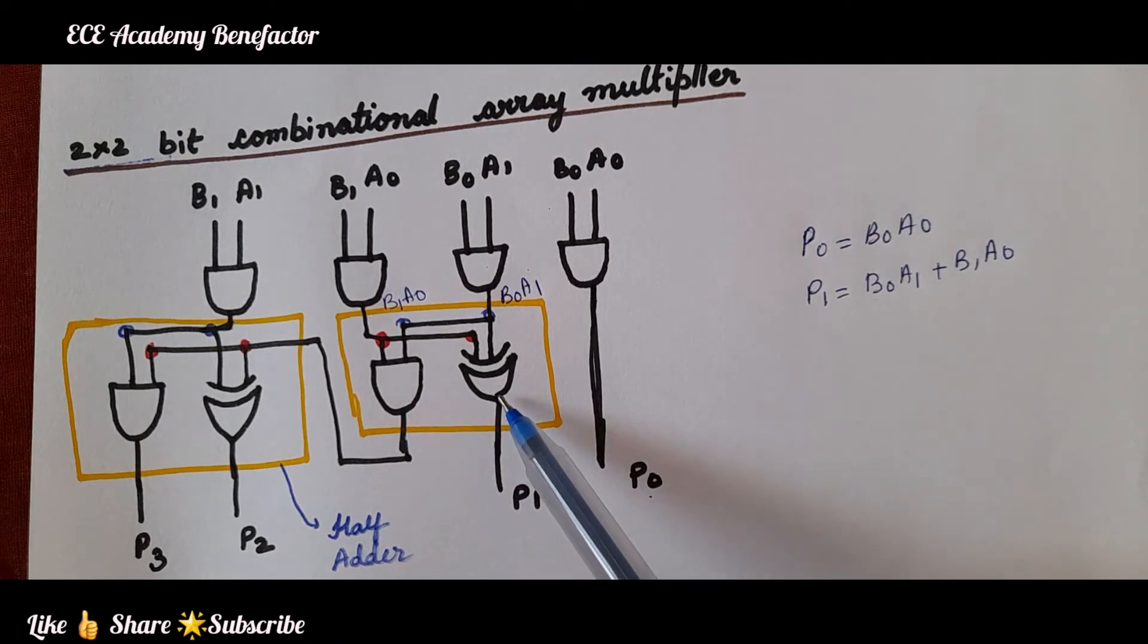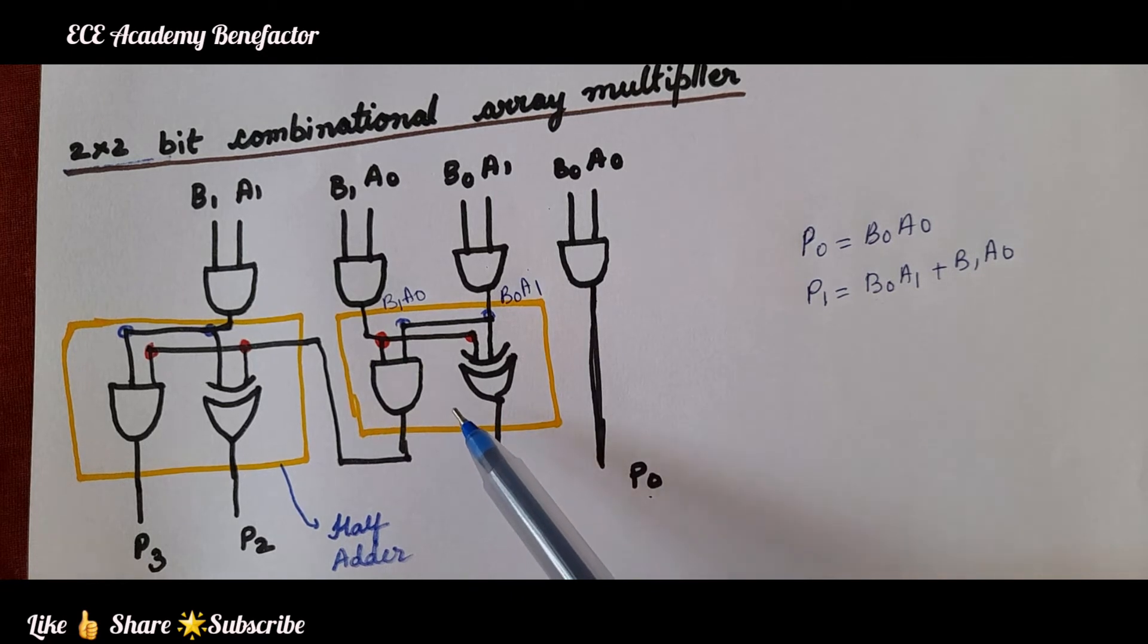XOR gate gives the sum and the AND gate generates the carry. As we have covered half adder, it is easy for you to understand this concept.